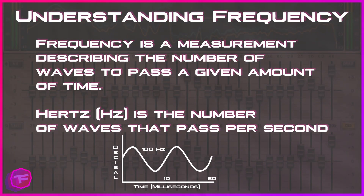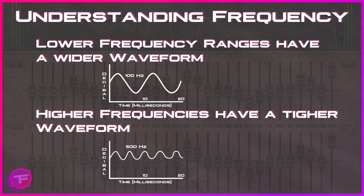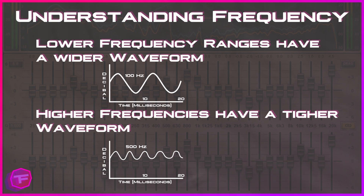Frequency is a measurement describing the number of waves to pass a given amount of time. Hertz — specifically Hz — is the number of waves that pass per second. In the graph below you can see an example of what a 100 Hz waveform looks like across 20 milliseconds. Depending on the frequency of an audio signal you will have different waveforms — a lower frequency will have a wider waveform.